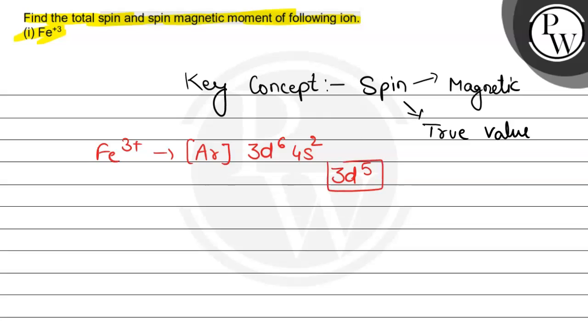So it means 5 electrons are there in the d orbital. This suggests that all 5 are unpaired electrons and they can have a total spin of either plus or minus 5 by 2, since each unpaired electron carries plus minus half spin value.